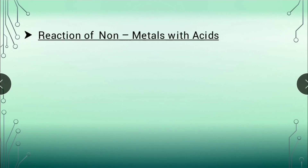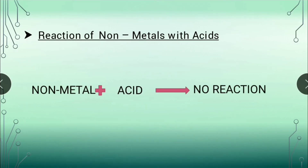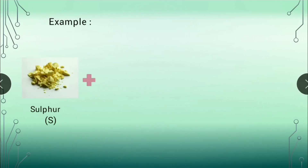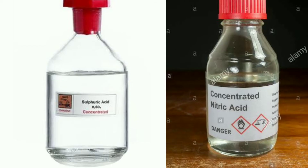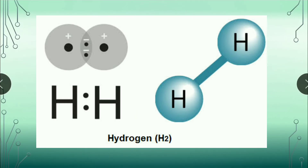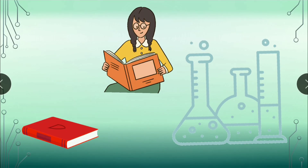Now let's see the reaction of non-metals with acids. Non-metals do not react with dilute acids to form salts and hydrogen gas. For example, if we take some sulphur powder or charcoal powder in a test tube and add dilute hydrochloric acid, then no reaction takes place even on heating. This shows that sulphur and carbon do not react with dilute acids and hence no hydrogen gas is produced. Some non-metals, however, react with hot and concentrated sulphuric acid and nitric acid, but no hydrogen gas is produced in such cases. We will study these reactions in higher classes.